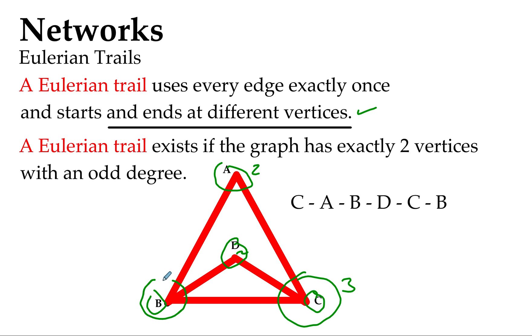And this one here has a degree of three as well. So it has exactly two vertices which have an odd degree. So no wonder we could create a Eulerian trail out of it.